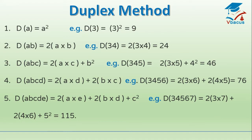Square of a 1-digit number: suppose I am taking 3, square of 3 is 9. Square of a 2-digit number: I have taken 34 — multiply both digits and double it. It will become 24.